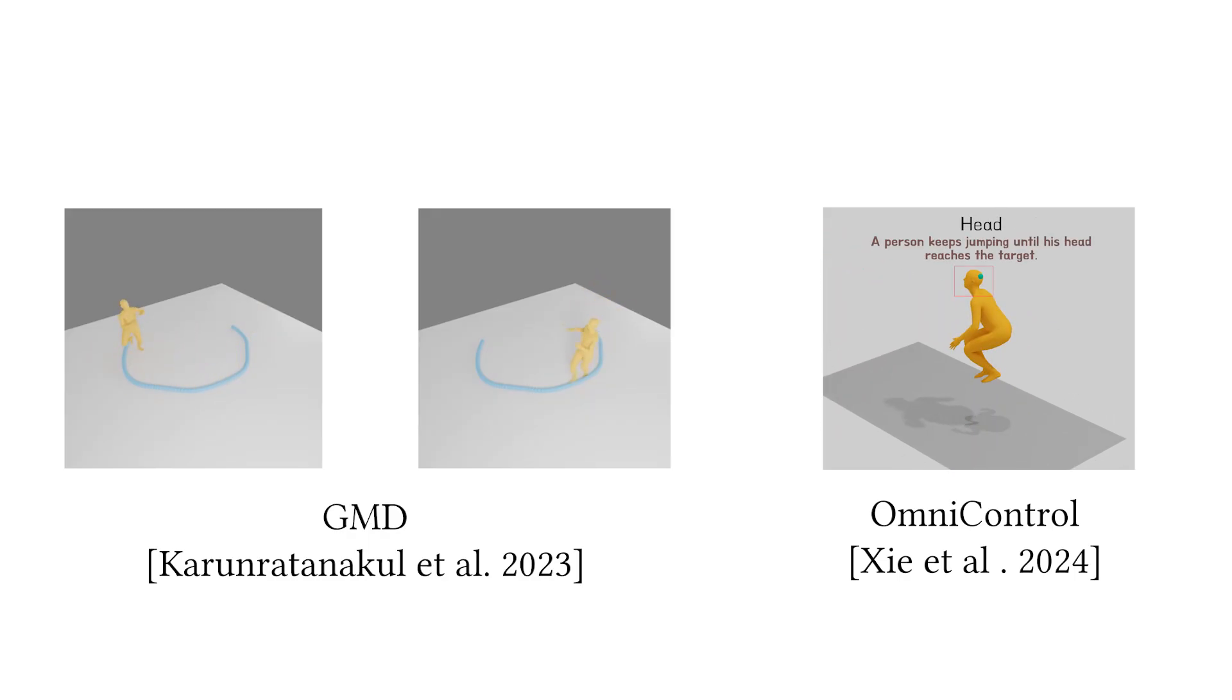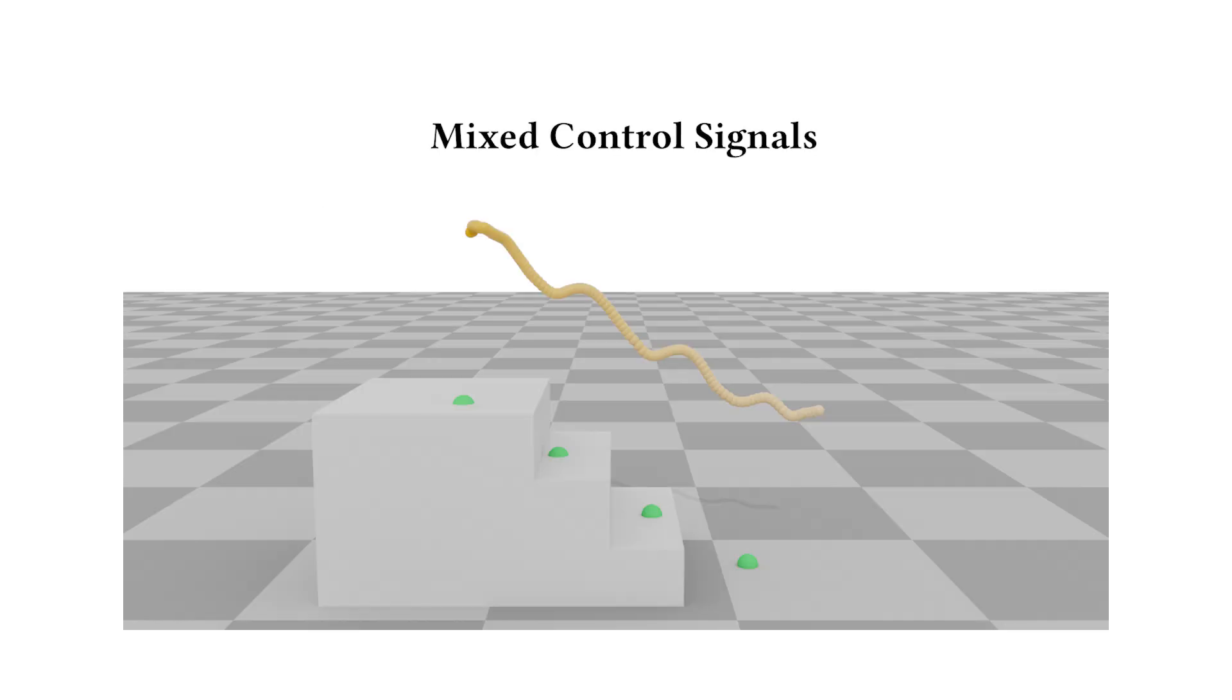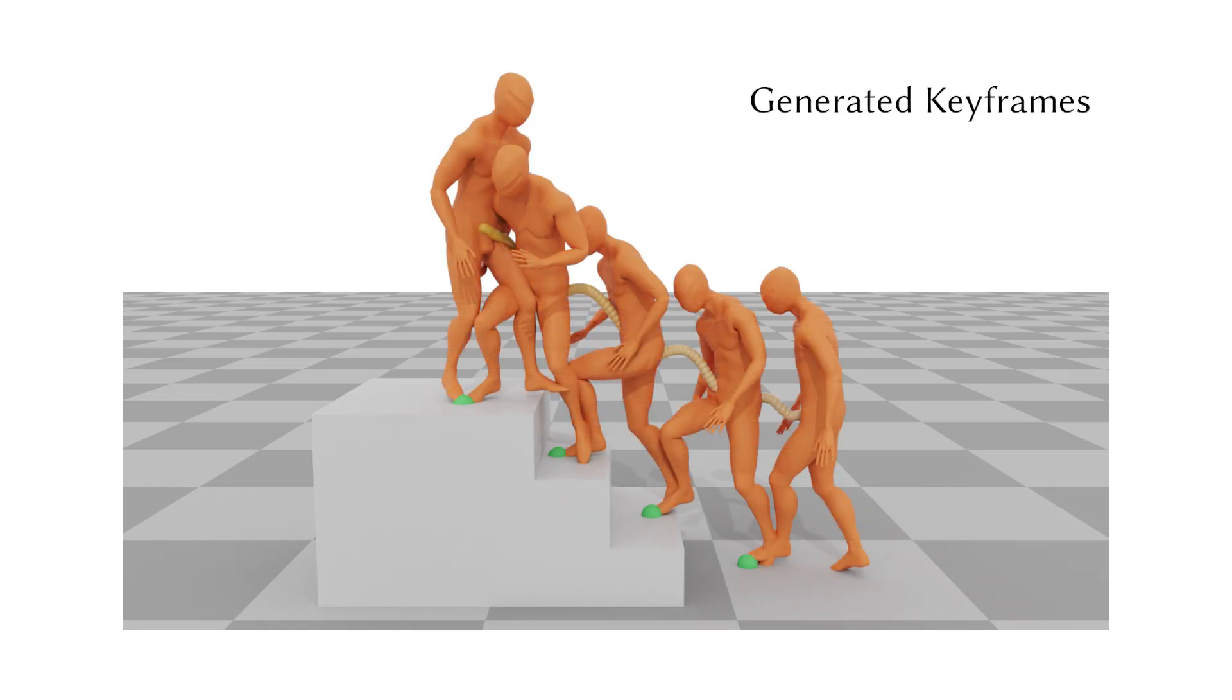However, existing methods often lack support for local motion modification and struggle to achieve precise control that balances fine-grained and coarse-grained control signals. Building on these limitations, we present Auto-Keyframe.